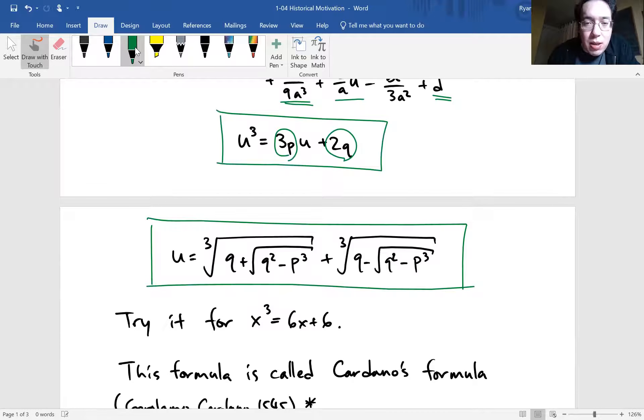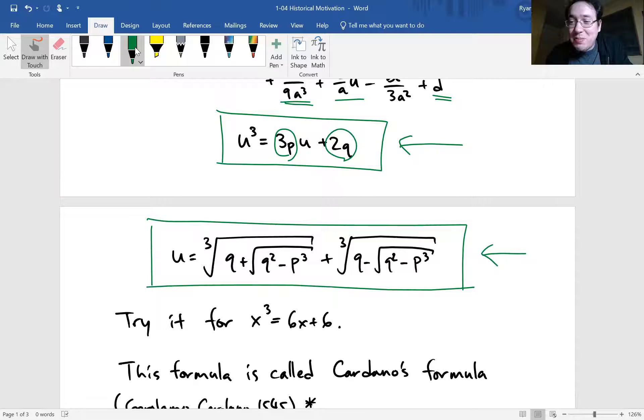Okay. So u, the solution to this cubic, could be written as cube root of q plus square root of q² minus p³, plus cube root of q minus square root of q² minus p³. Okay. So you're probably wondering, how did it go from that step to this step? That's in your homework. Okay? So that's the fifth problem of the first homework. It will walk you through how you can go from this cubic down to this solution right there. But the solution works.